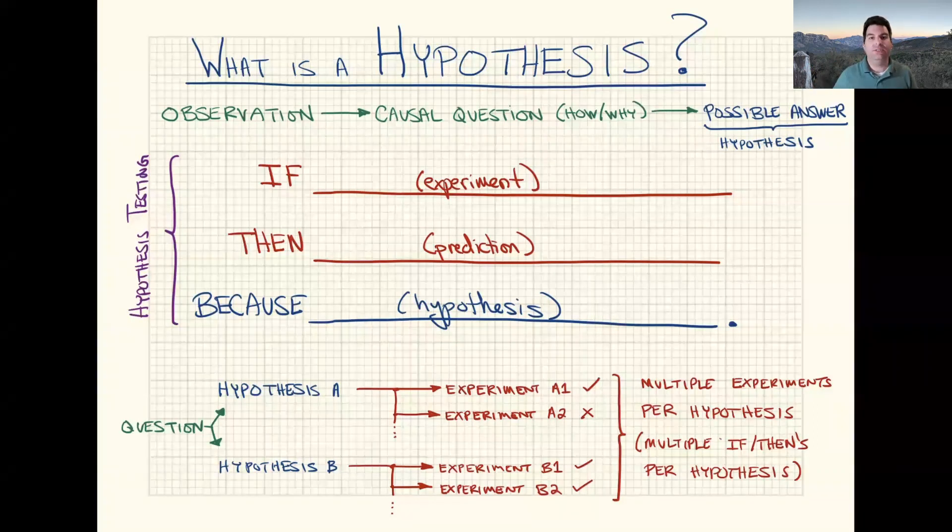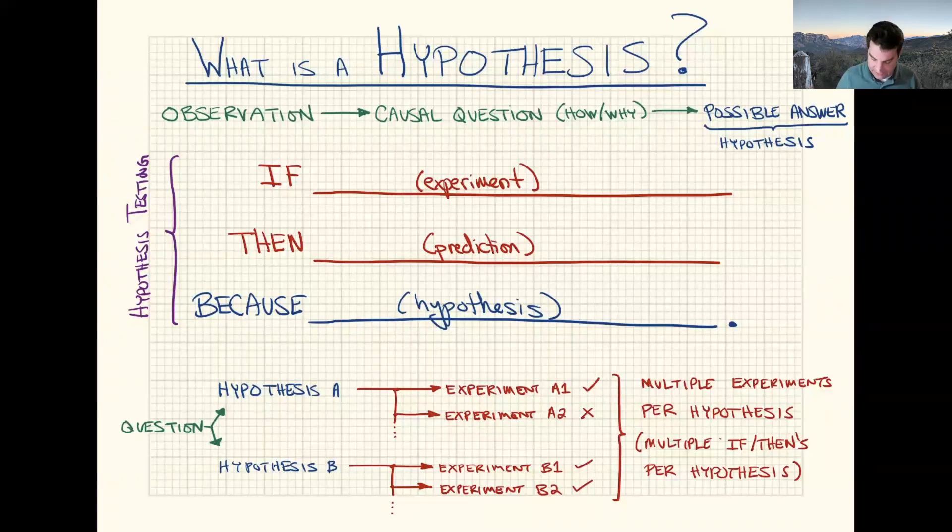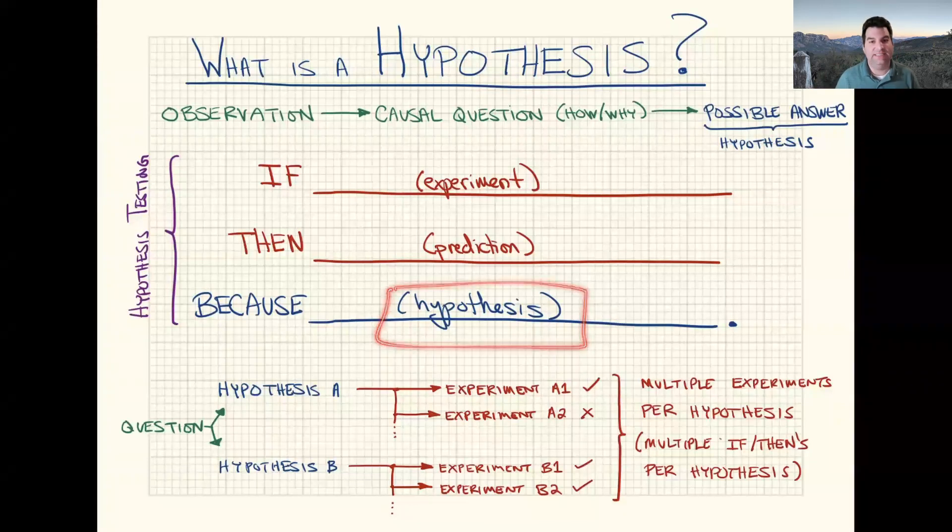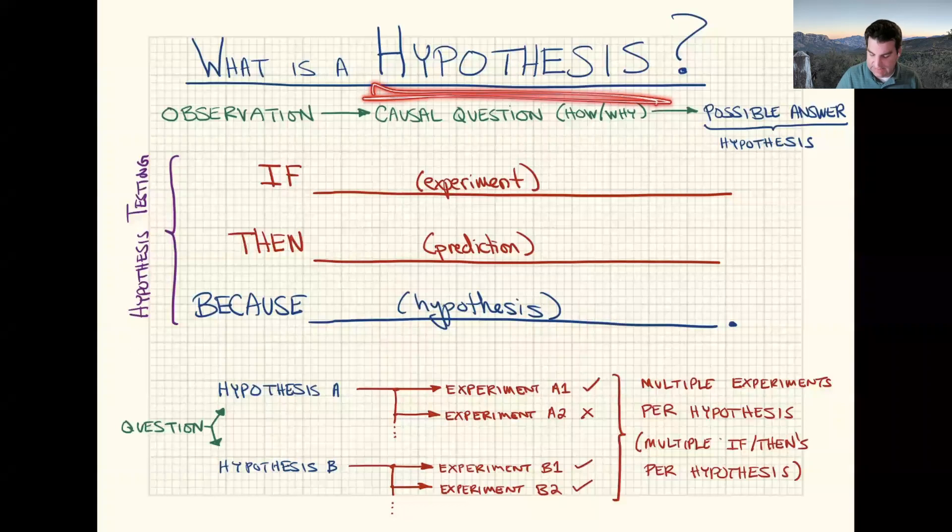And eventually we might get hundreds of experiments and over hundreds of experiments, we find out that our vitamin E hypothesis is never rejected. At that point, then the hypothesis starts becoming something that we might be able to take for granted.